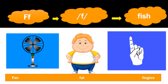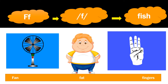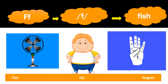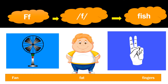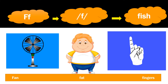Letter F — capital F and small f. F sounds like 'F'. F for fish. F for fan — F-A-N, fan. F for fat — F-A-T, fat. Have you seen a boy who is very fat? Look at this picture carefully, there is a boy standing who is very fat. Then how many fingers do you have? Five fingers. F for fingers — F-I-N-G-E-R-S, fingers.